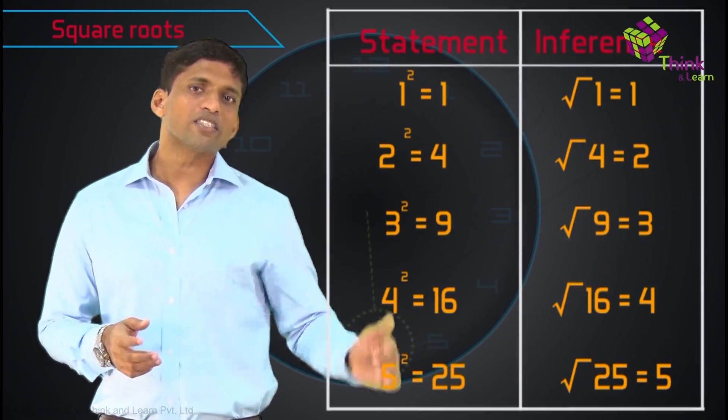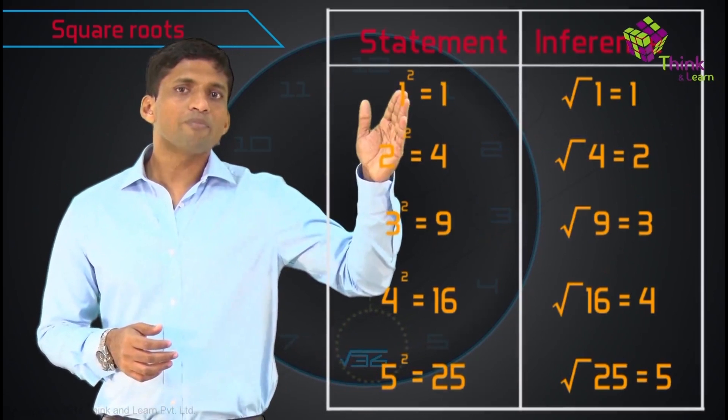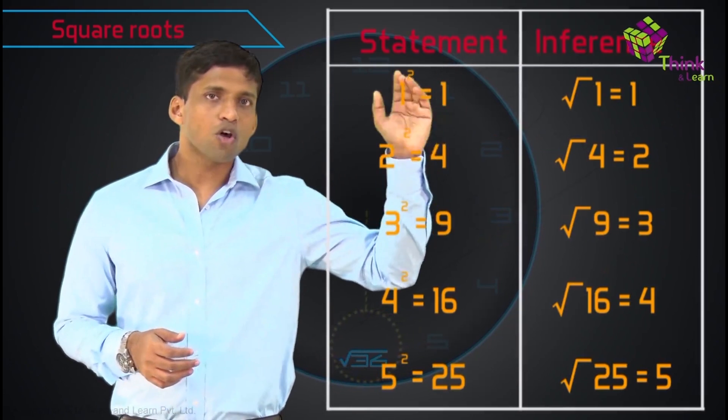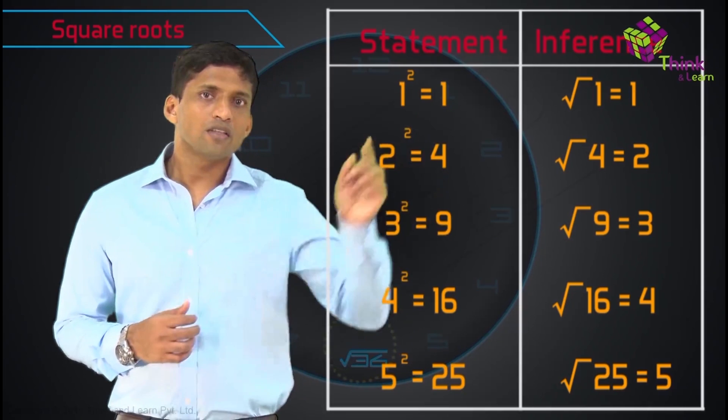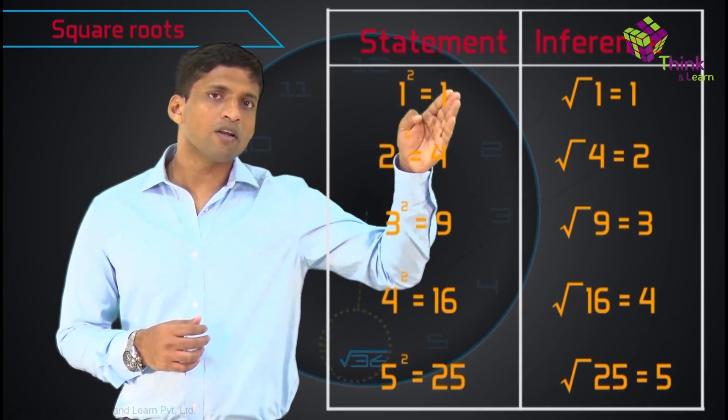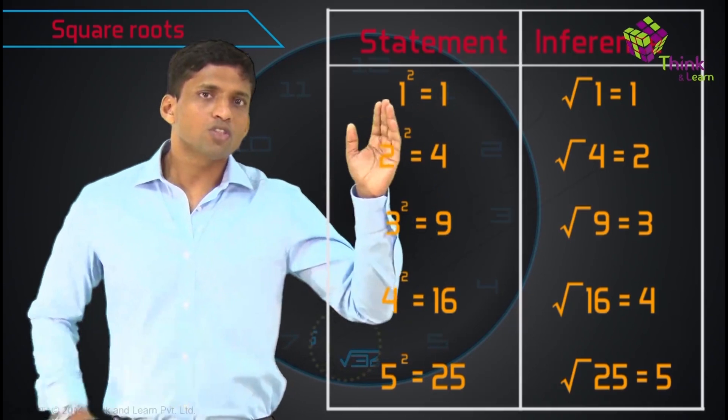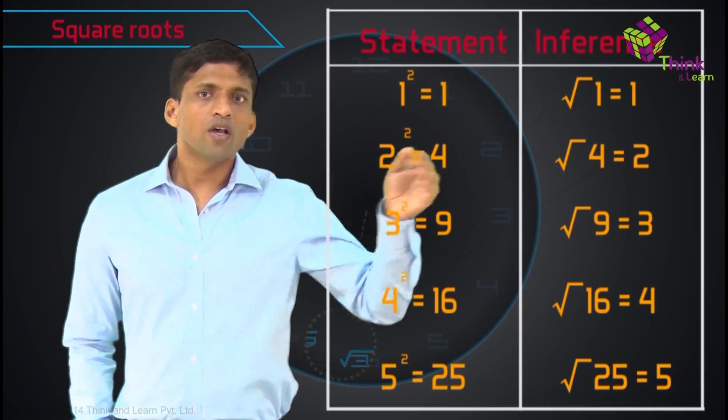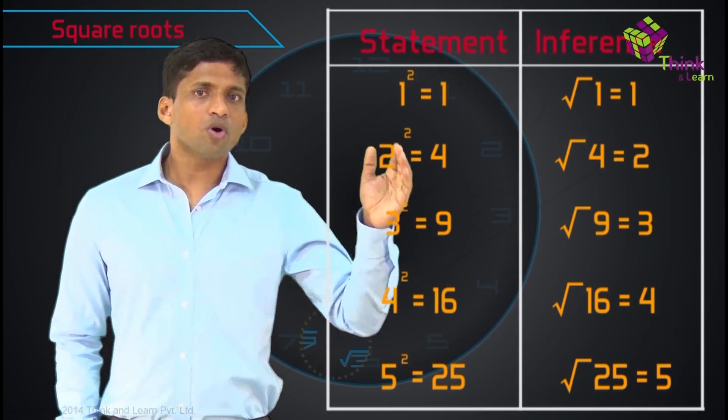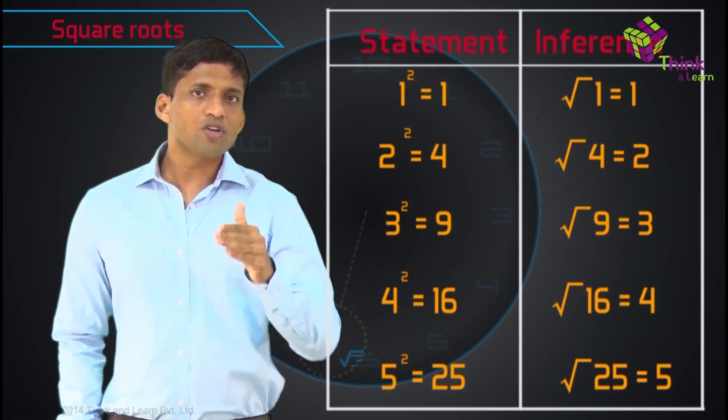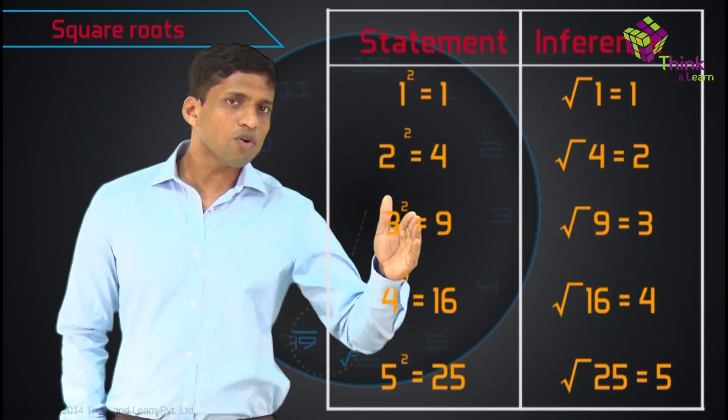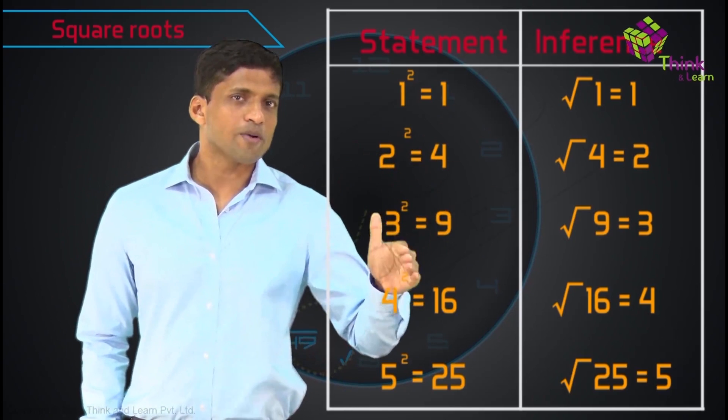Now just look at this table so you can understand this. 1 square is 1, that's the statement. So inference is root 1 equal to 1. This is how square root is denoted. 2 square is 4 as a statement, square root of 4 is equal to 2. 3 square equal to 9, square root of 9 equal to 3. 4 square is equal to 16, square root of 16 equal to 4. This is how we represent.